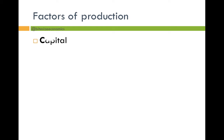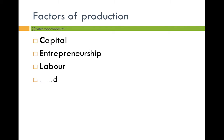Before we examine those, I just need to give you a brief on different factors of production: capital, entrepreneurship, labour and land. A good way to remember this is CELL — Capital, Entrepreneurship, Labour and Land. These are known as factors of production; all of these go into the production process.